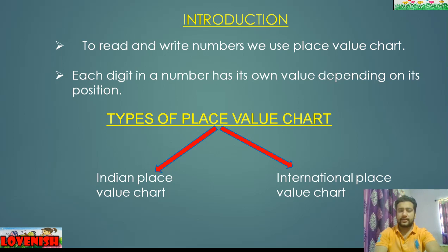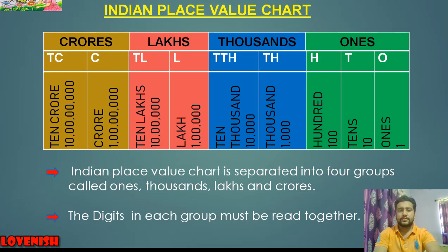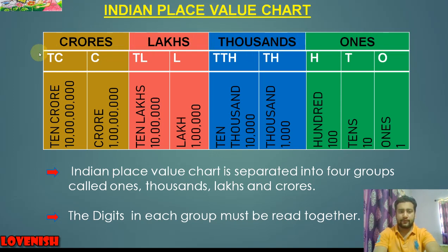There are two types of place value charts: the Indian place value chart and the international place value chart. First we will discuss the Indian place value chart. This chart is divided into four groups: the group of ones, the group of thousands, the group of lakhs, and the group of crores.